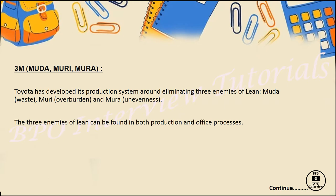So let's start the topic — 3M, which is Mura, Muri, and Mura. This was introduced in the Toyota management and production system, wherein they want to eliminate three enemies from the production process. Mura means complete waste, Muri means overburden, and Mura means unevenness. We will explain each one by one so that you get a clear understanding.